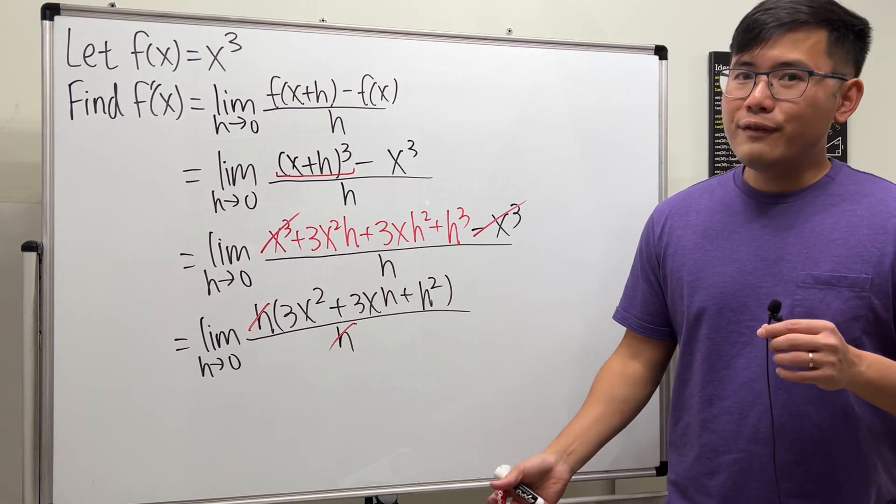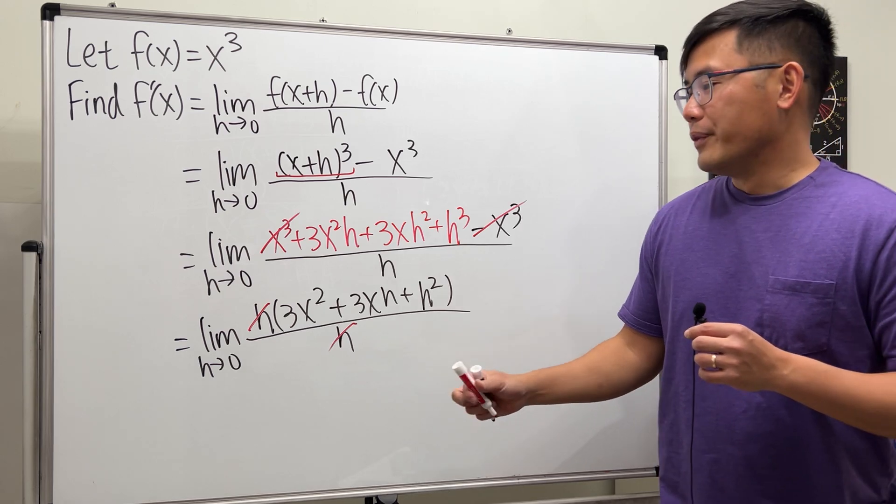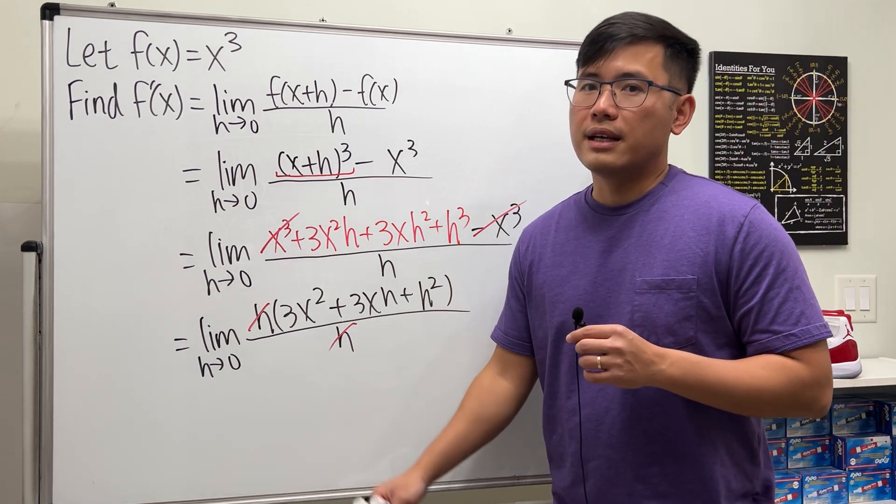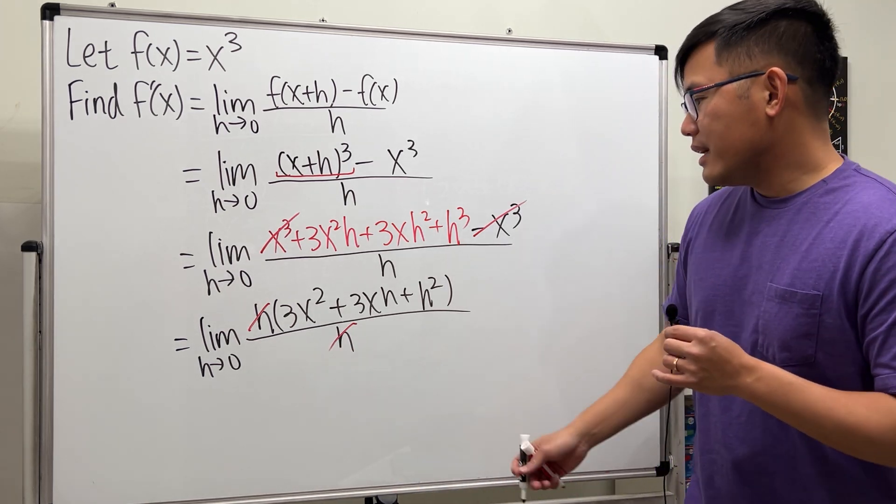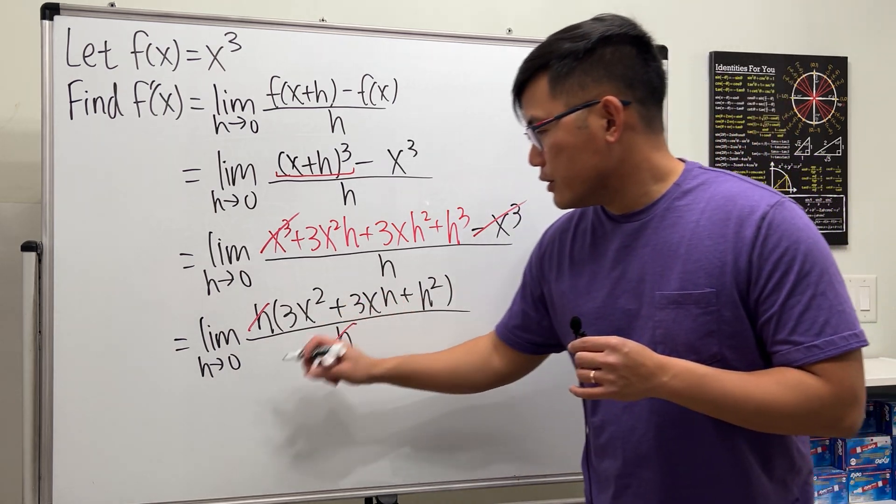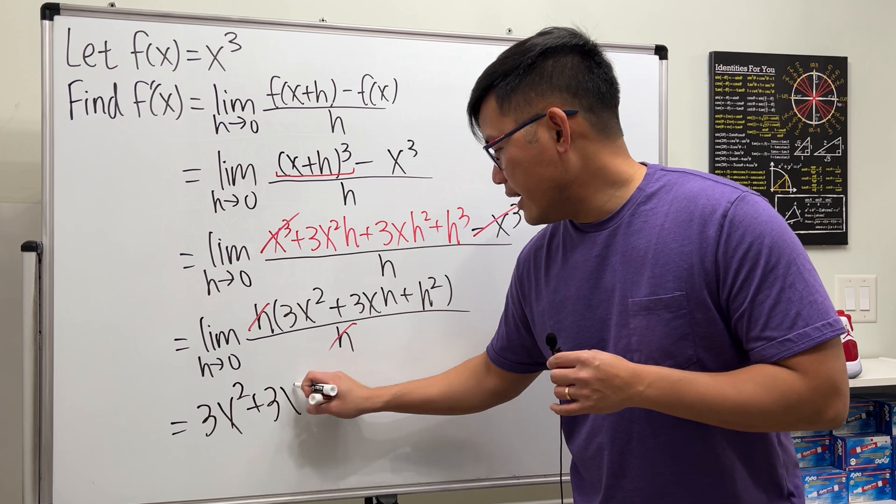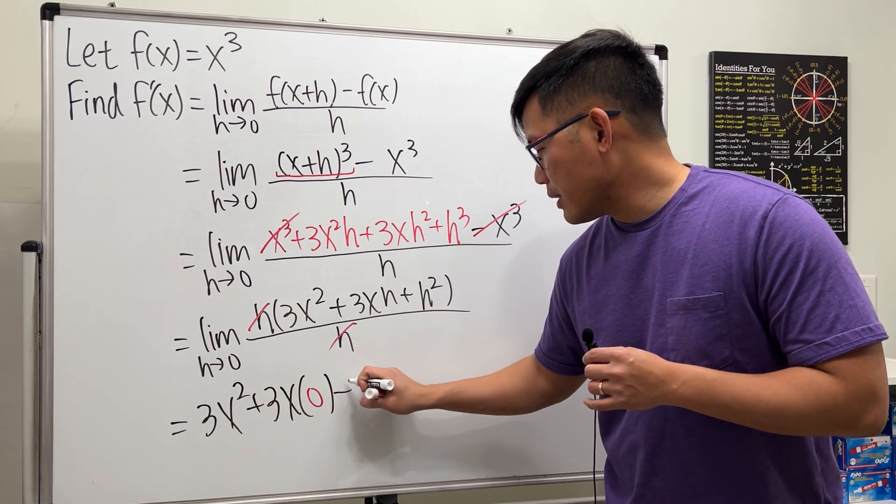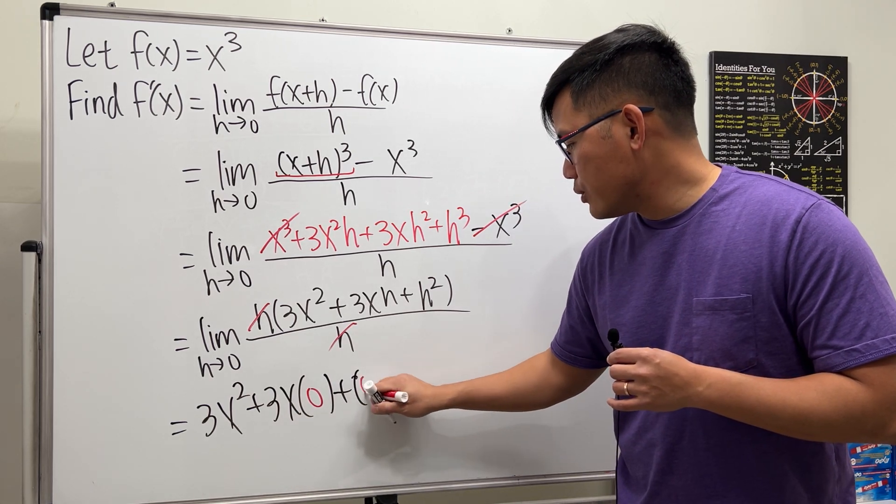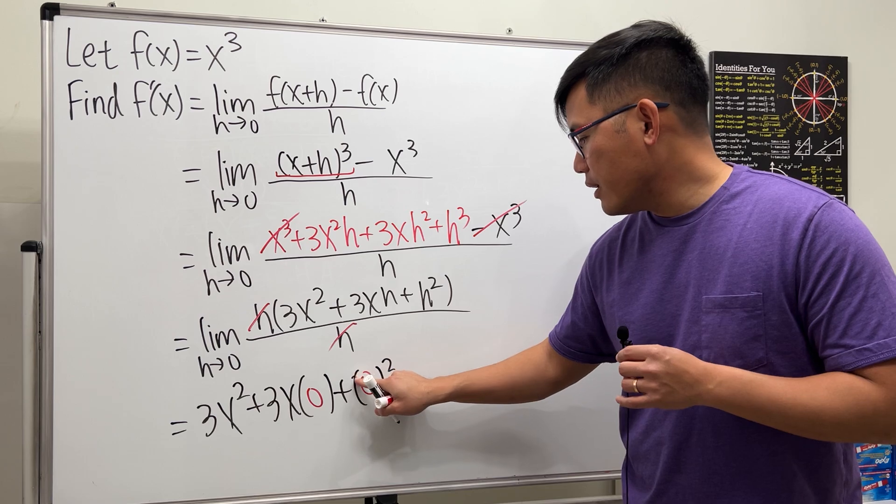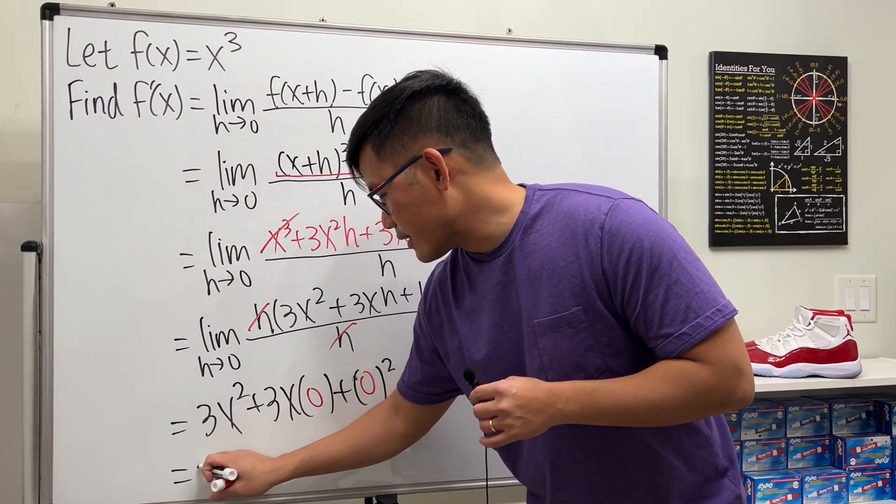Yes, this h and h cancel. And whenever we're doing the definition of derivative, you can expect that the bottom h to be canceled. Okay, then we just put a zero into this h and that h, so we get 3x square plus 3x times zero plus zero square. And of course these are just zeros, so the final answer, as I told you guys earlier, here is just 3x square.